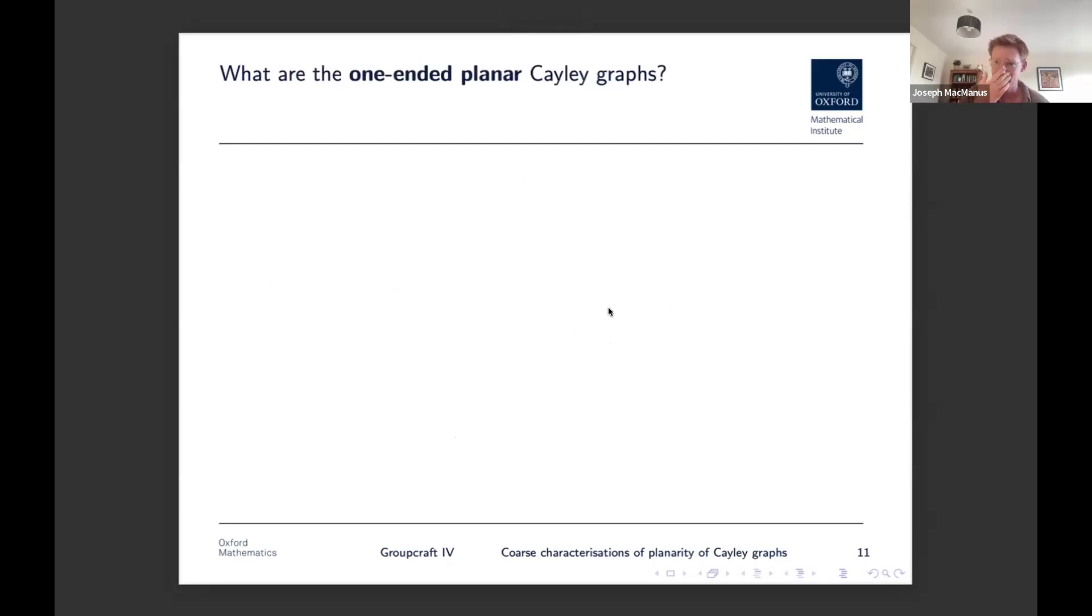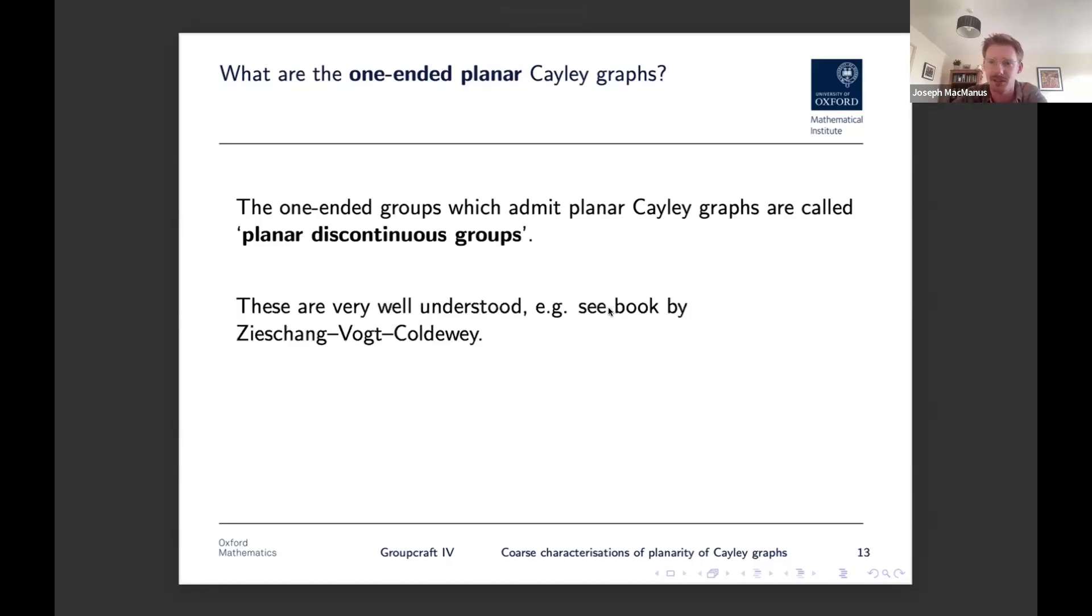Anyway, so let's talk about the infinite planar Cayley graphs a little bit. I'm not going to say too much because there's a lot to be said. But the one-ended planar Cayley graphs essentially correspond to, well, they are what's called planar discontinuous groups. These are objects that are very well understood. They're basically like wallpaper groups and hyperbolic equivalents. If you want to read about these, read the book on them by Zieschang, Vogt, and Coldewey. Anyway, this book was in German. It's from like the 1950s, but John Stillwell, who translated Serre's Trees, translated this as well, apparently. So it's probably a good read. I haven't read it myself, but I've looked for it.